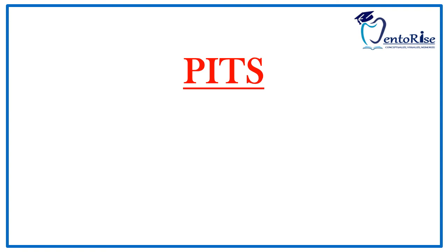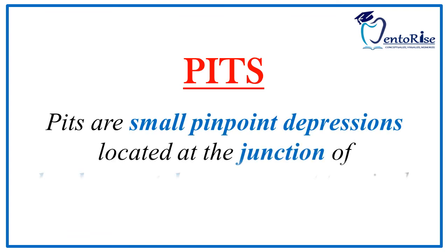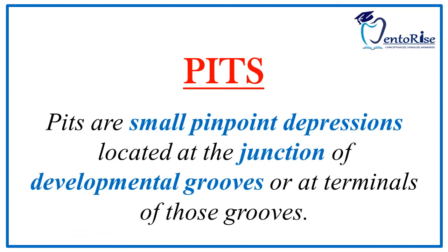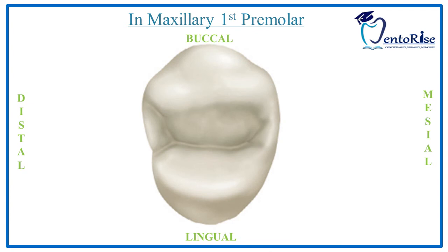Starting with the second section of the video — the pits present on the tooth. Pits are small pinpoint depressions located at the junction of the developmental grooves. On observing the occlusal surface of maxillary first premolar, the pit present on the mesial side, formed by the confluence of the central developmental groove, the mesiobuccal developmental groove, and the mesial marginal developmental groove, is called as the mesial pit. Similarly, the pit on the distal side, formed by the confluence of the central developmental groove and the distobuccal developmental groove, is called as the distal pit.